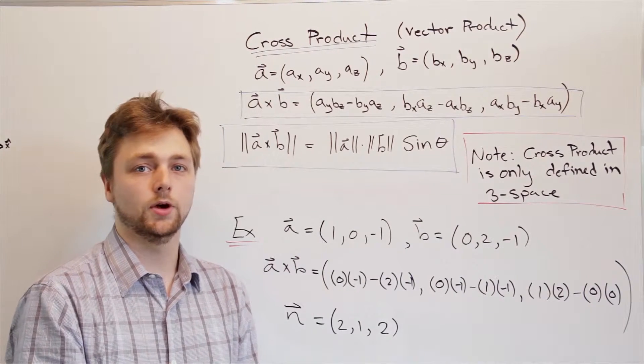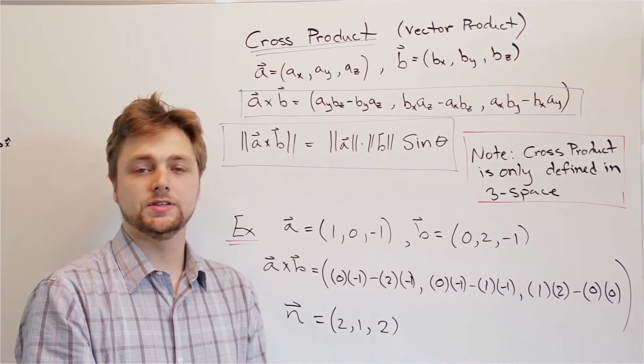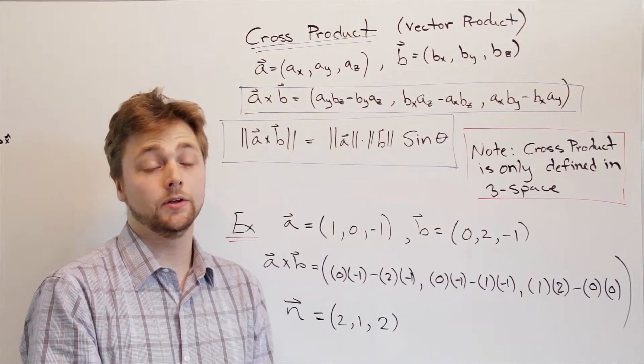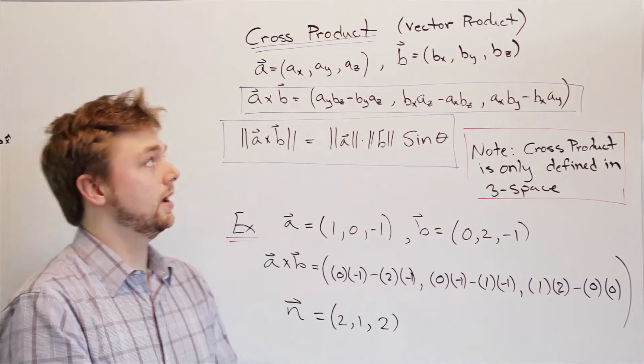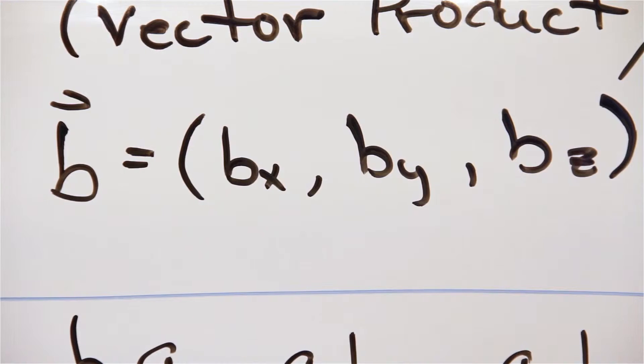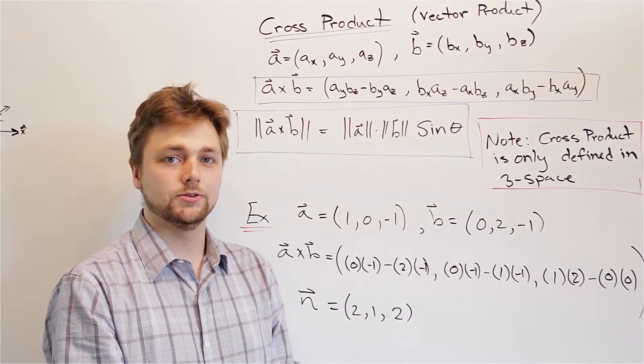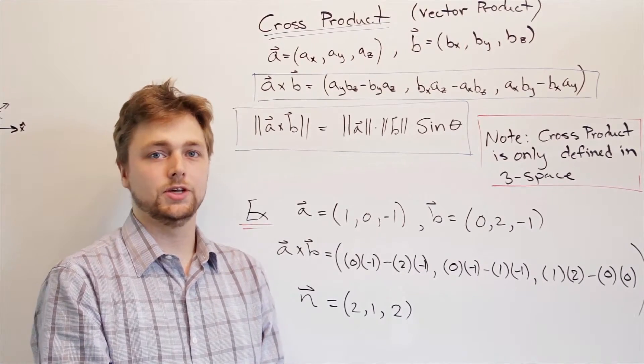Next, let's take a look at the cross product. Unlike the previous example of the dot product, where the result that came out was a scalar and not a vector, this time the cross product, which we sometimes refer to as the vector product, will return a vector. Also, unlike the dot product, where it didn't necessarily have the best geometric interpretation, the cross product has a very good interpretation.